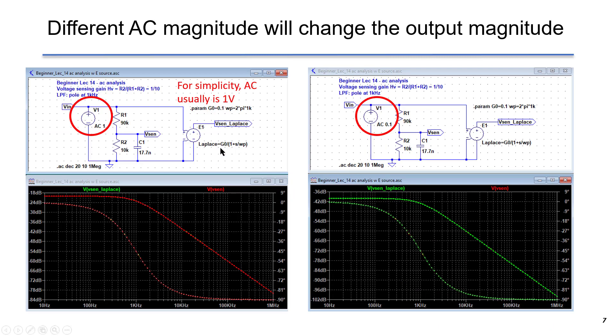As shown in the previous lecture, if we put different AC amplitude, the output voltage will be shifted up or down. For example, on the right-hand side, the AC amplitude is reduced to 0.1. That means the magnitude at output will be shifted as well, which means minus 20 dB. In this case, we see the Bode plot magnitude is smaller than the one on the left-hand side by 20 dB.